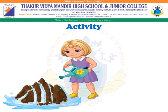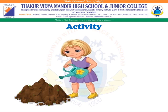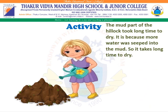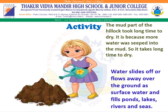Now, if we stop watering the hillock, observe carefully what happens. As we stop watering, the surface of the hillock starts drying. This is because the process of absorption stopped and the water seeped into the hillock. The stone part of the hillock dried quickly, while the mud part took a long time to dry, because more water seeped into the mud. You might have noticed that rainwater seeps into the soil and reaches a layer of solid rock, collecting there as groundwater. Whereas some water comes out to the surface as springs, and some slides off or flows away over the ground as surface water, filling ponds, lakes, rivers, and seas.